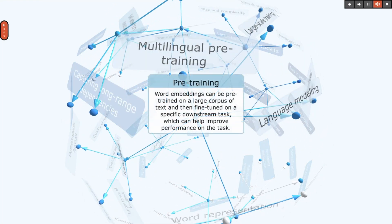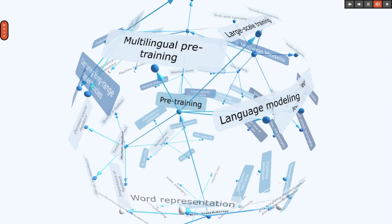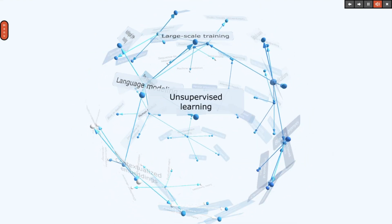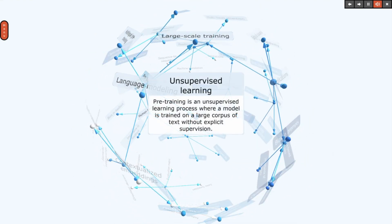Word embeddings can be pre-trained on a large corpus of text and then fine-tuned on a specific downstream task, which can help improve performance on the task. Pre-training is an unsupervised learning process where a model is trained on a large corpus of text without explicit supervision.